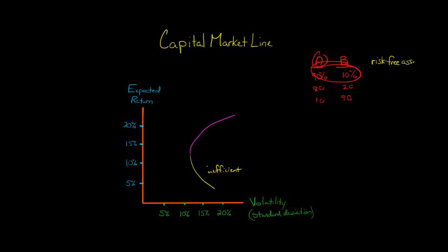We could say we want a certain amount in stock A, a certain amount in stock B, and then a certain amount invested in the risk-free asset — let's say one-month treasury bills or something like that.